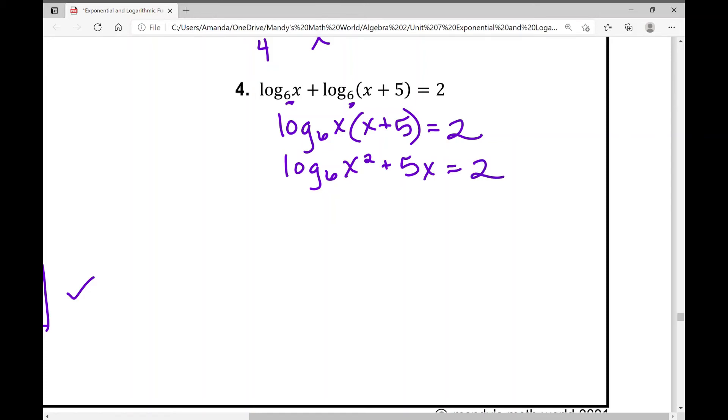Now I've condensed it to a single logarithm so I can rewrite it. The first thing we did was condense it. And now we're going to rewrite it. So how do I rewrite it? Six to the power of two equals x squared plus five x. Let's just continue to simplify. What can I simplify at this point? What is six squared? That's 36 equals x squared plus five x.